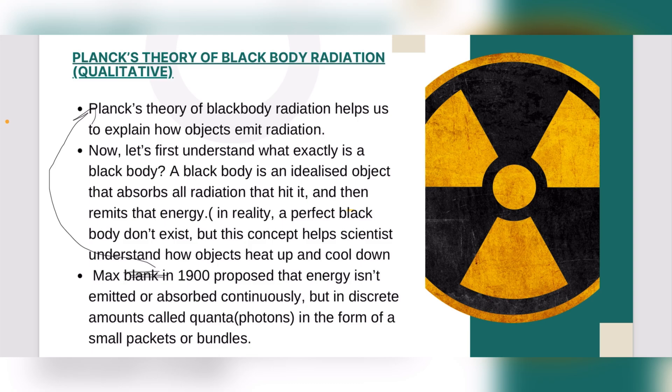A black body is an idealized object that absorbs all radiation that falls on it. It will absorb all of those radiations and then re-emit that energy. In reality, a perfect black body doesn't exist, but in science we assume things and on the basis of those assumptions we prove things — that's how we get results.